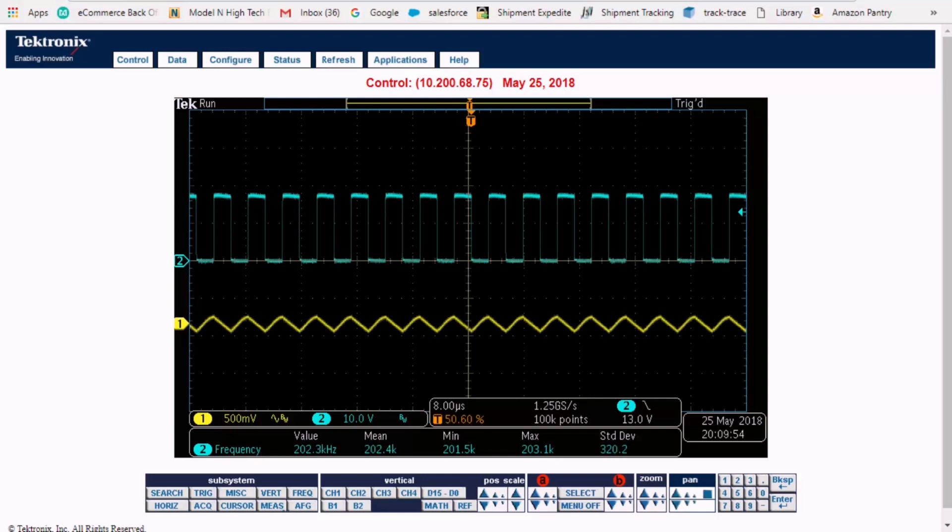I am probing plus 15 volt output and you can see the output voltage ripple. The second channel I am probing is the drain source voltage of the primary side MOSFET whose switching frequency is 200 kilohertz.